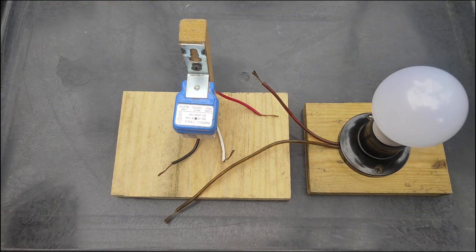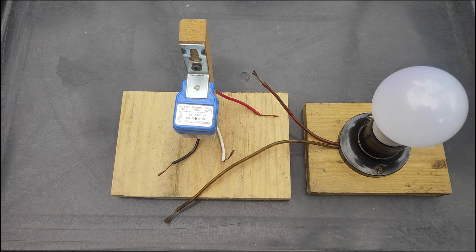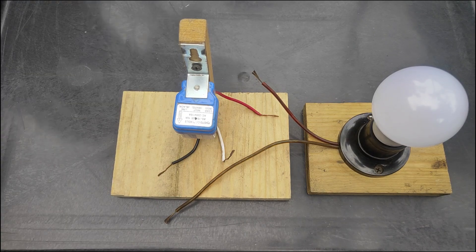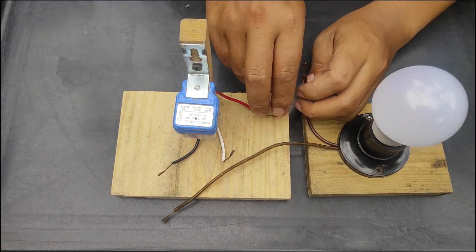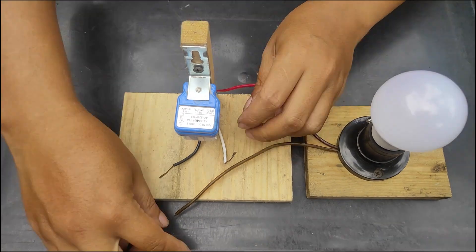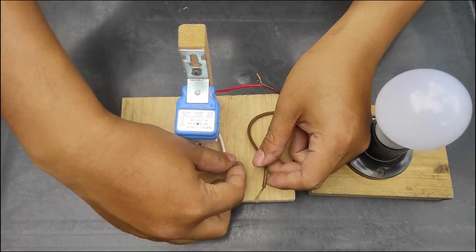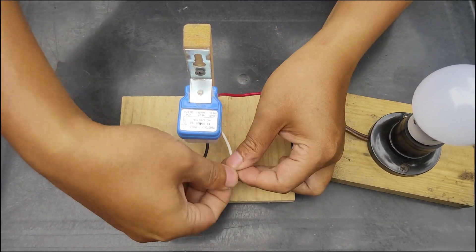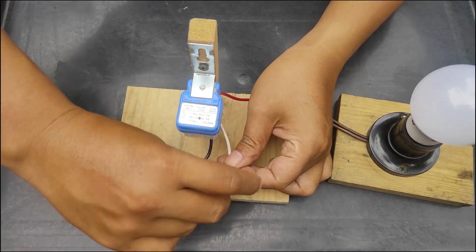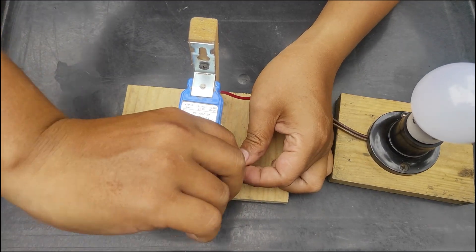Now let's start wiring. First, connect the red wire from the sensor to one of the wires from the lamp. This is the load wire, which will control the light. Next, connect the white wire from the sensor to the other wire from the lamp. This completes the circuit for the light.